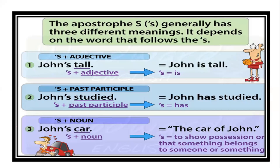¿Tenemos más preguntas? Digamos que con lo que me doy por satisfecha es que ustedes conozcan que hay cuatro formas de expresar que algo pertenece a alguien: apostrophe S, possessive pronouns, possessive adjectives, and the verb 'have'. Son cuatro formas en las cuales yo puedo expresar que algo le pertenece a alguien. This material will be available on the drive for you to download and continue practicing.